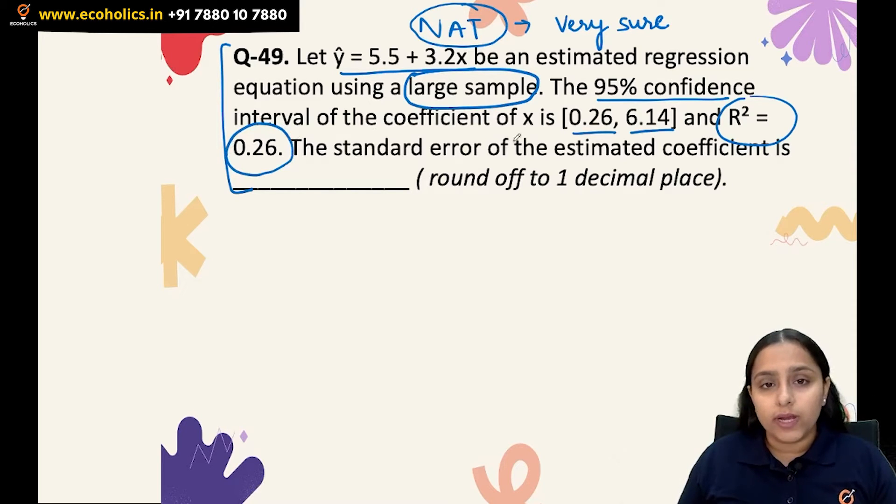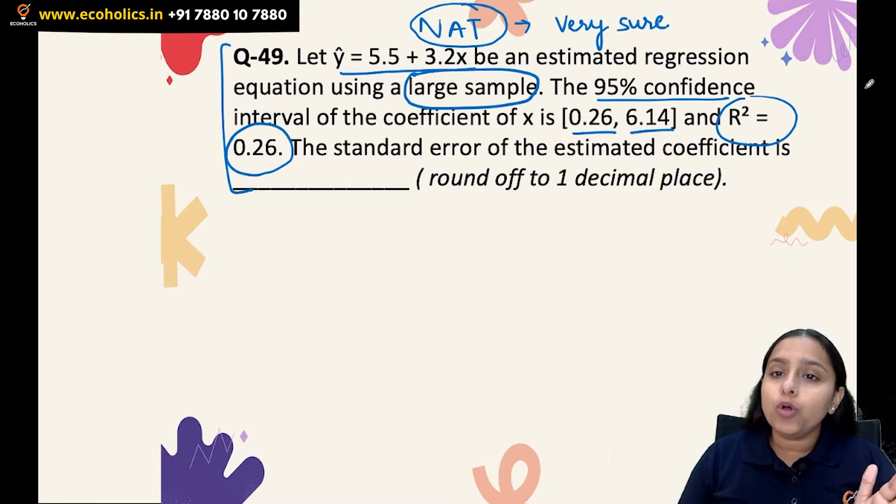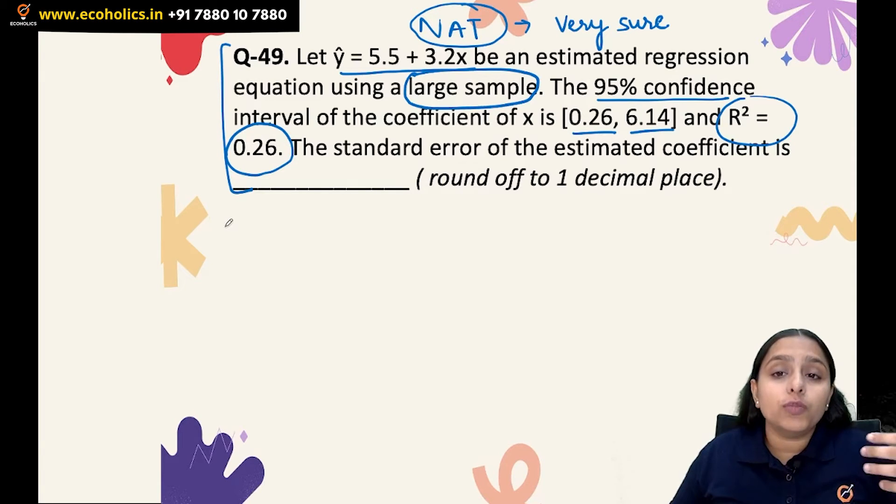You have to calculate the standard error of the estimated coefficient. There are two methods through which you can do this, but both methods will require you to use the upper limit and lower limit of the confidence intervals. I'm choosing the easiest way here.